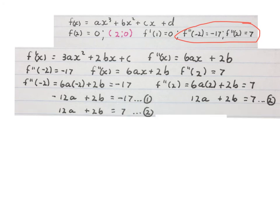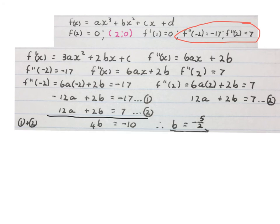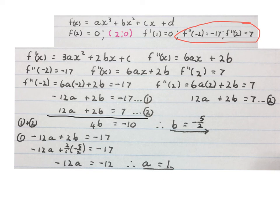Using elimination, write equation 2 underneath equation 1. Adding them: minus 12a plus 12a cancels; 2b plus 2b is 4b; and adding the constants gives minus 10. So b = -5/2. Substituting b = -5/2 back into equation 1 and simplifying gives a = 1. Please pause and make sure you understand what happened.